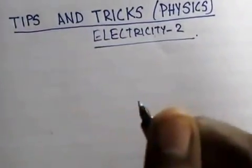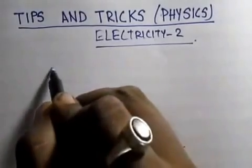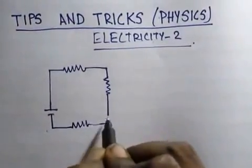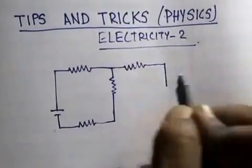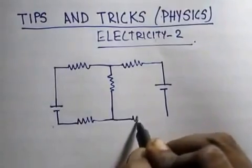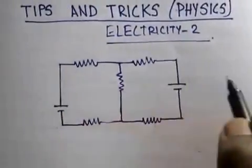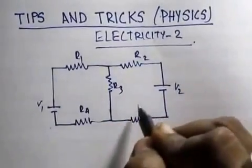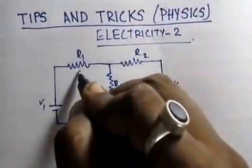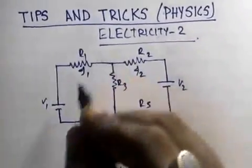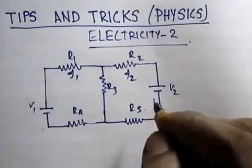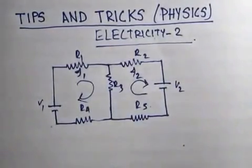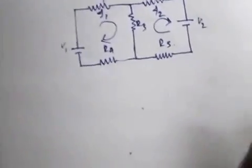Many times we see questions in this form — I remember this sort of circuit was given in an IIT JEE exam, and you can find it in many problem books as well. The circuit has v1, v2, r1, r2, r3, r4, r5, and they ask you to find the current through any one of them. One process is obviously to apply Kirchhoff's law, but let me tell you a shortcut: the Superposition Theorem.